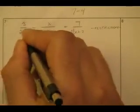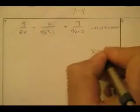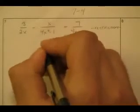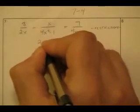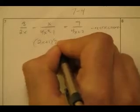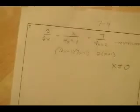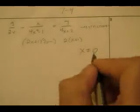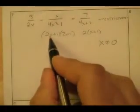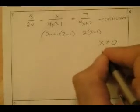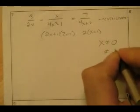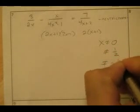Let's do our restrictions first so we don't get into trouble. I have 2x in one denominator — x cannot be 0. Also, 4x squared minus 1 factors as (2x plus 1)(2x minus 1), and another denominator is 2 times (x plus 1). So x cannot be 0, x cannot be 1 half, and x cannot be negative 1 half.